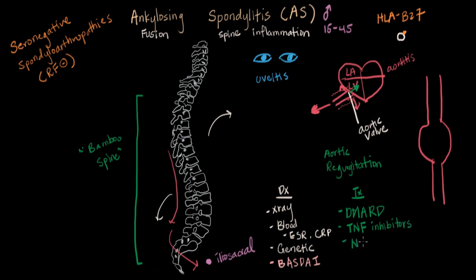We can use NSAIDs — these are over-the-counter drugs you'd think of as pain meds, for example ibuprofen. They not only treat the pain from the fused spine, they can also reduce inflammation. Stronger pain meds can be used as well, depending on the level of discomfort. As you can see, the theme here is to decrease inflammation. That's ankylosing spondylitis in a nutshell.